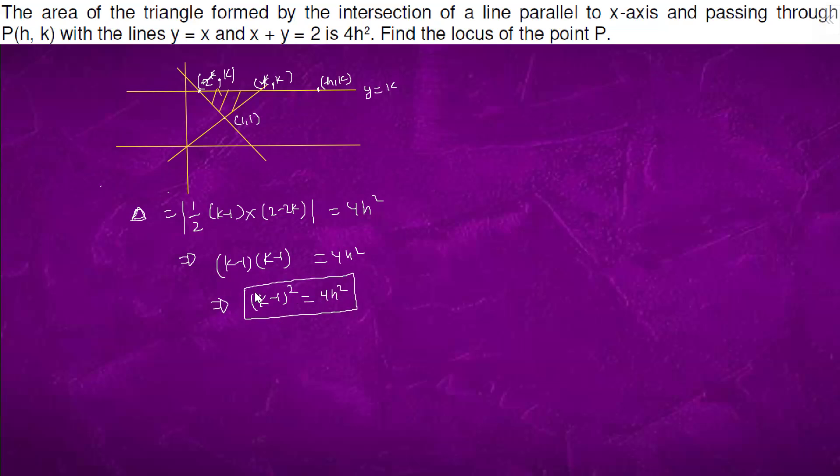This is the locus. We write it in the form of y minus 1 whole squared equals to 4x squared. That's all.